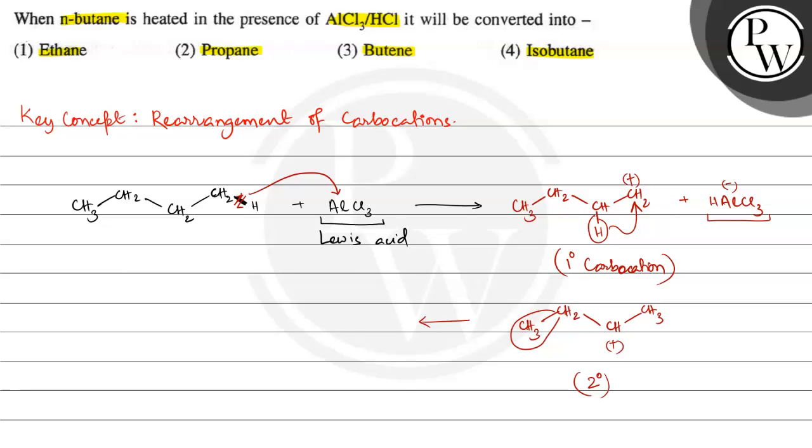Then this methyl migrates over here. And then we will get CH2-CH-CH3, and here a CH3. And then here we have a positive charge. Then again, this is a 1-degree carbocation.